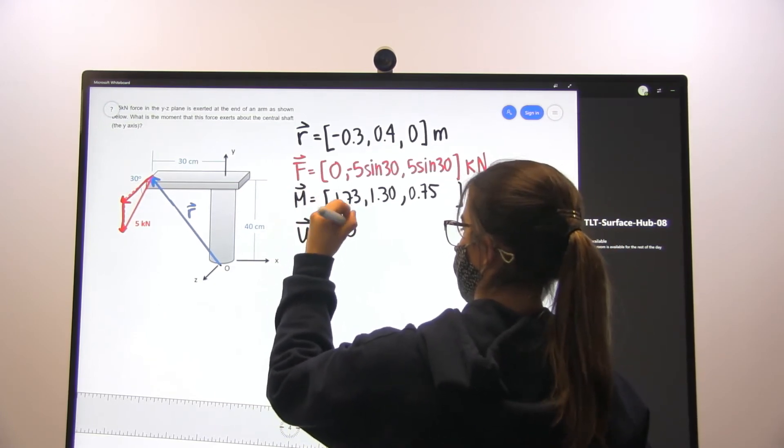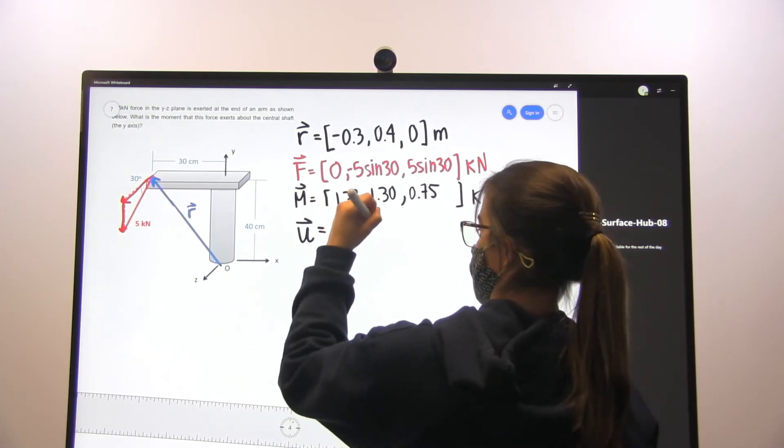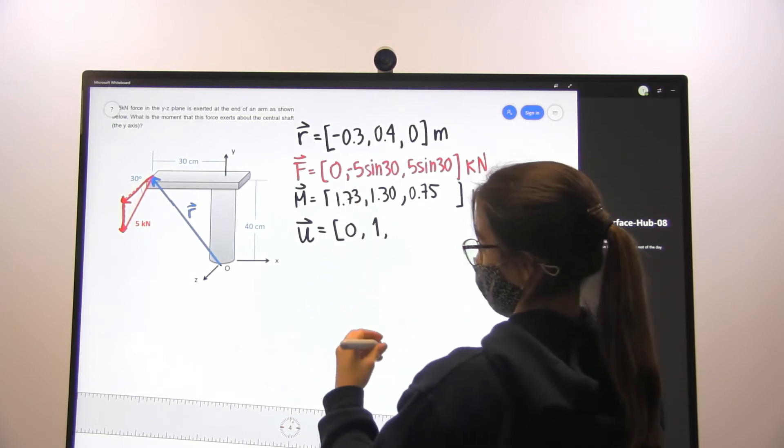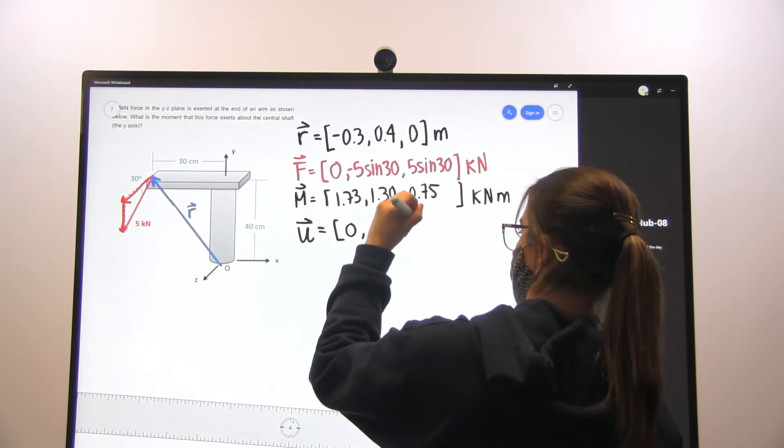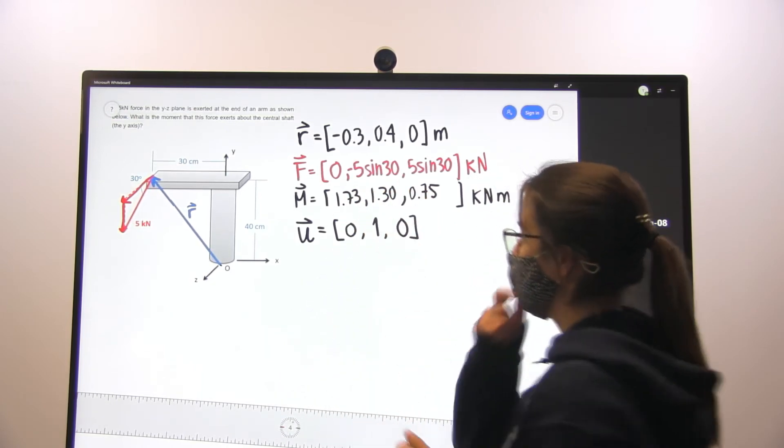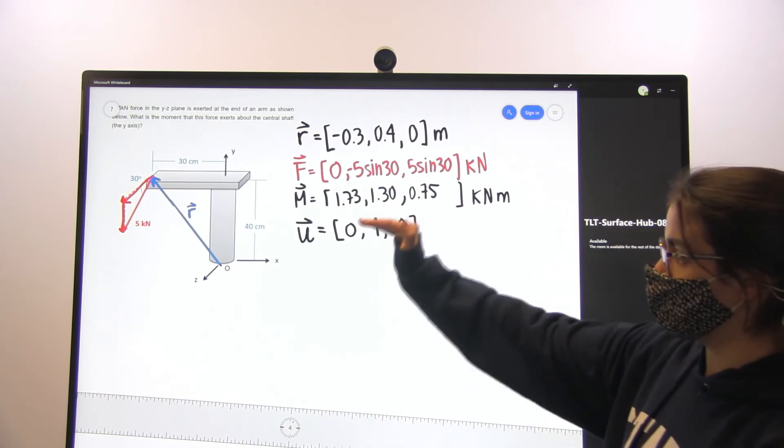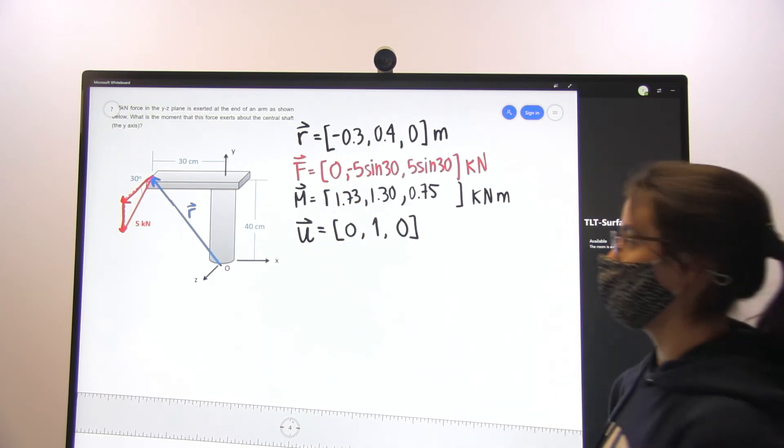And so that is going to be 0 in the x-direction, 1 in the y-direction, 0 in the z-direction. And so by doing that, we're going to find the magnitude of that moment on our central shaft.